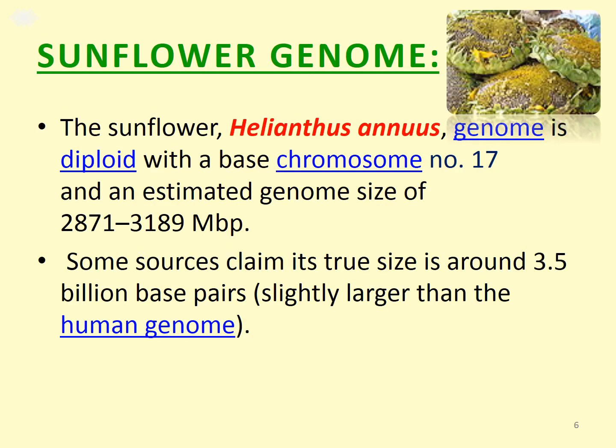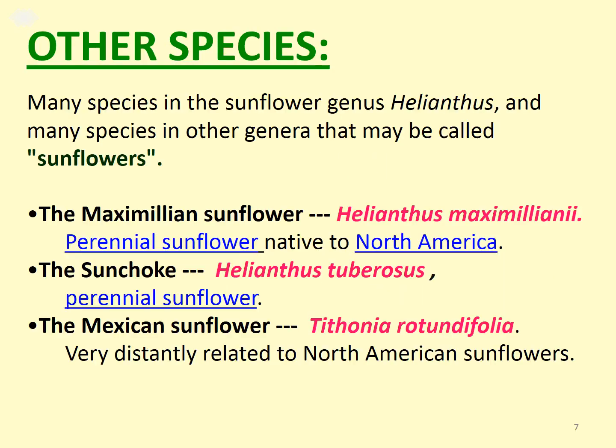The sunflower Helianthus annuus genome is diploid with a basic chromosome number of 17 and an estimated genome size of 2,871 to 3,189 megabase pairs, that is 2.8 to 3.2 GB. Some sources claim the true size is around 3.5 billion base pairs, slightly larger than the human genome. There are many species of genus Helianthus, including the Maximilian sunflower (Helianthus maximiliani), a perennial native to North America, and the sunchoke (Helianthus tuberosus), also perennial in nature.